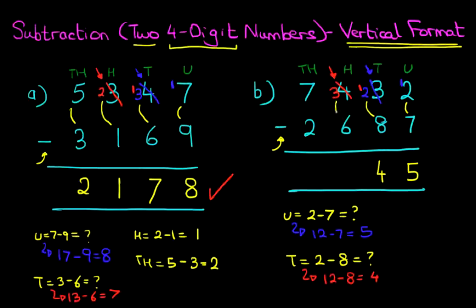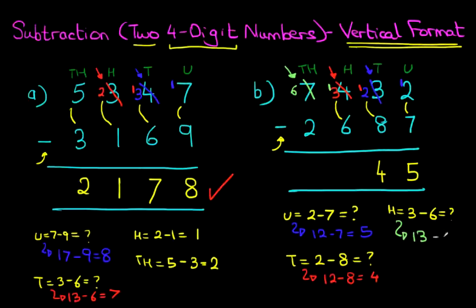We're now on to the hundreds. And for the hundreds we have 3 minus 6. Now again, 3 is smaller than 6, so we cannot do this. What we're going to do is take one from the thousands on its left — the 7. So let's cross out the 7. 7 minus 1 is 6. And the one we have taken from here, we're going to add it to the hundreds column. So therefore the hundreds has now become 13 minus 6. 13 minus 6 — the answer is 7. So let's write that down.